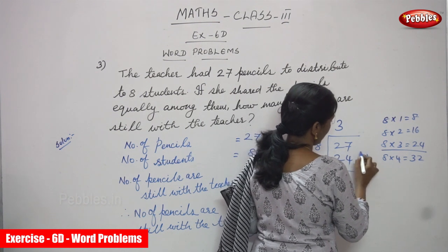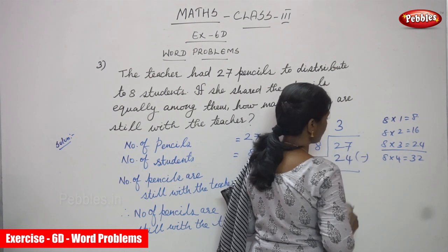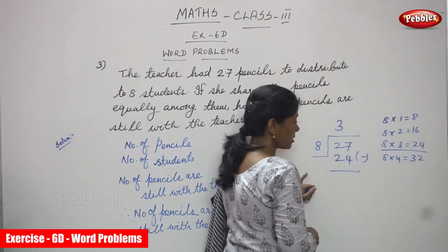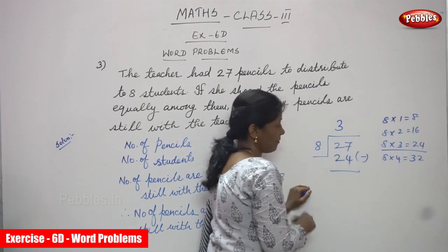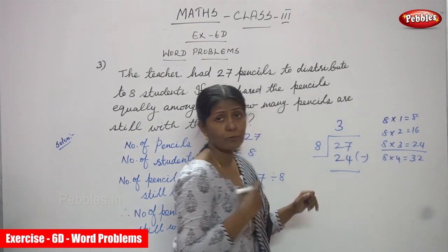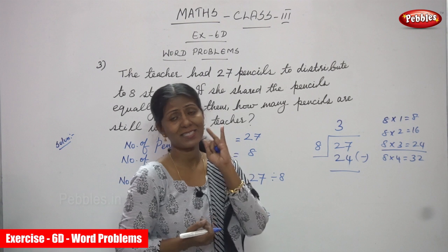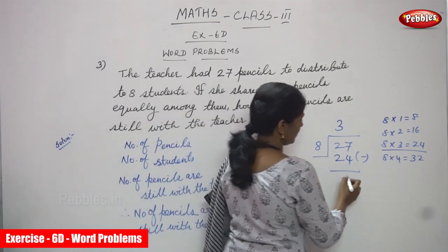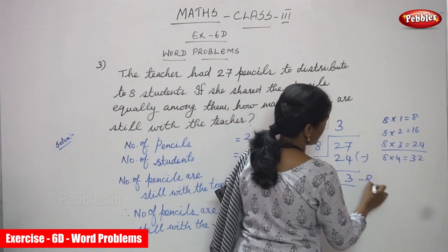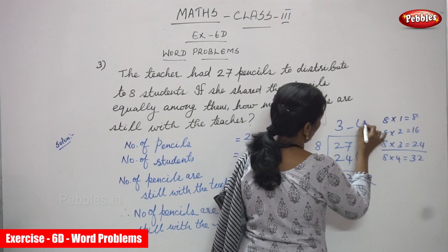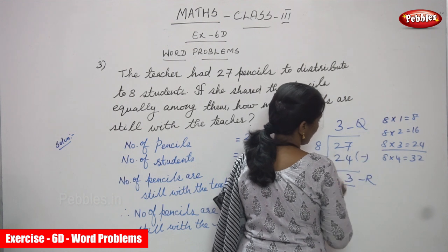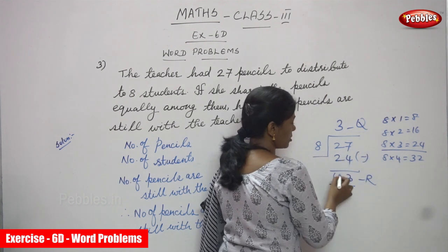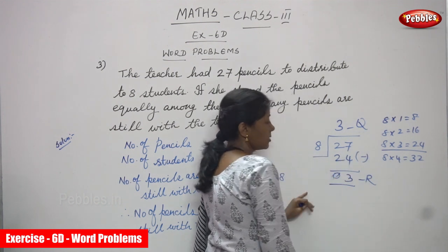Now you are going to subtract: 7 minus 4. Use backward counting — these are the ones and tens. After 4 means 5, 6, 7 — so the number is 3. 3 is the remainder and 3 is the quotient. 2 minus 2 is 0, and 0 is not considerable. So the remainder is 3.